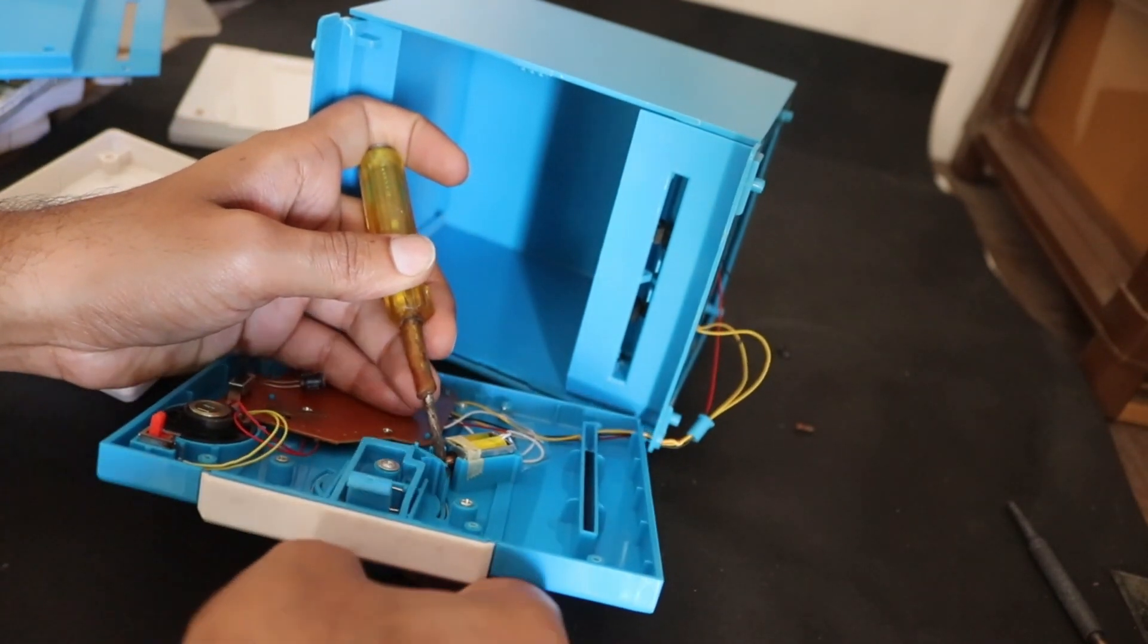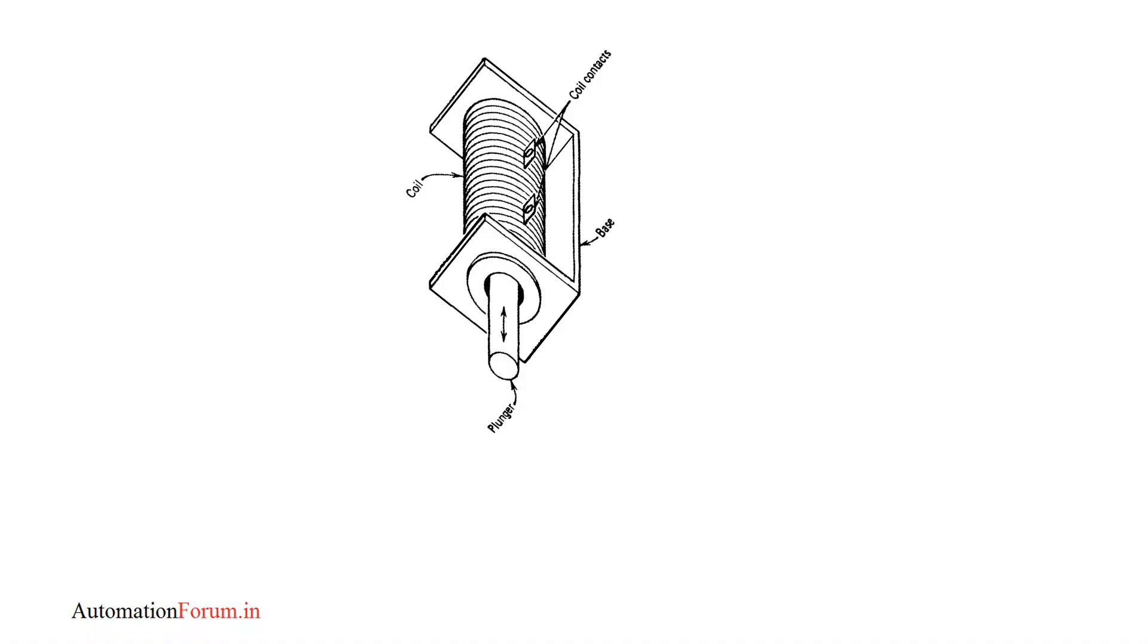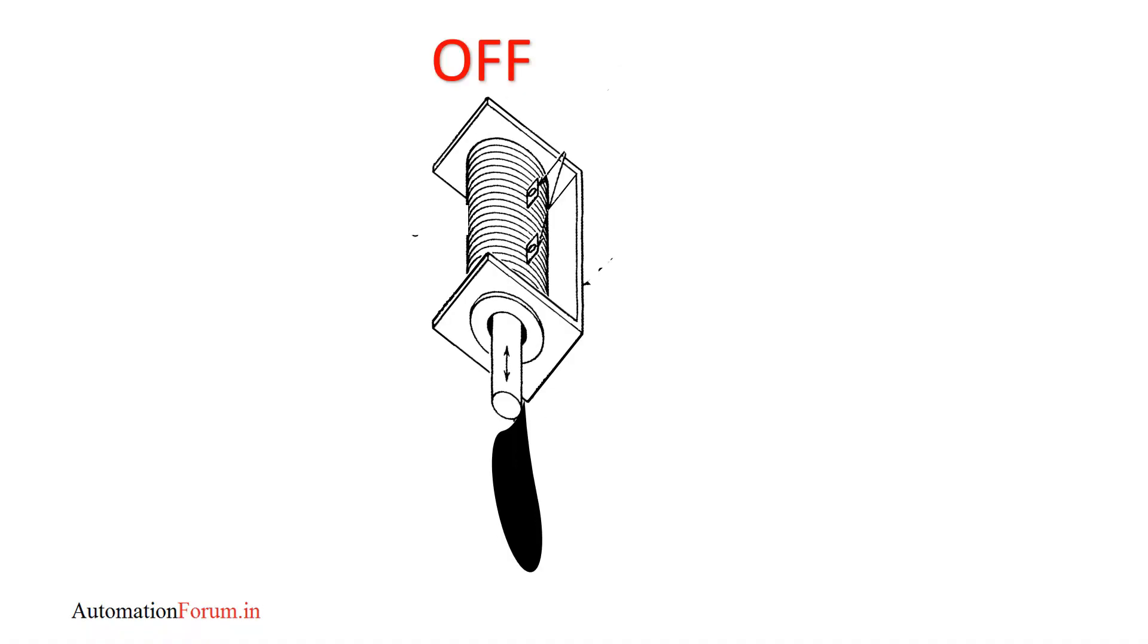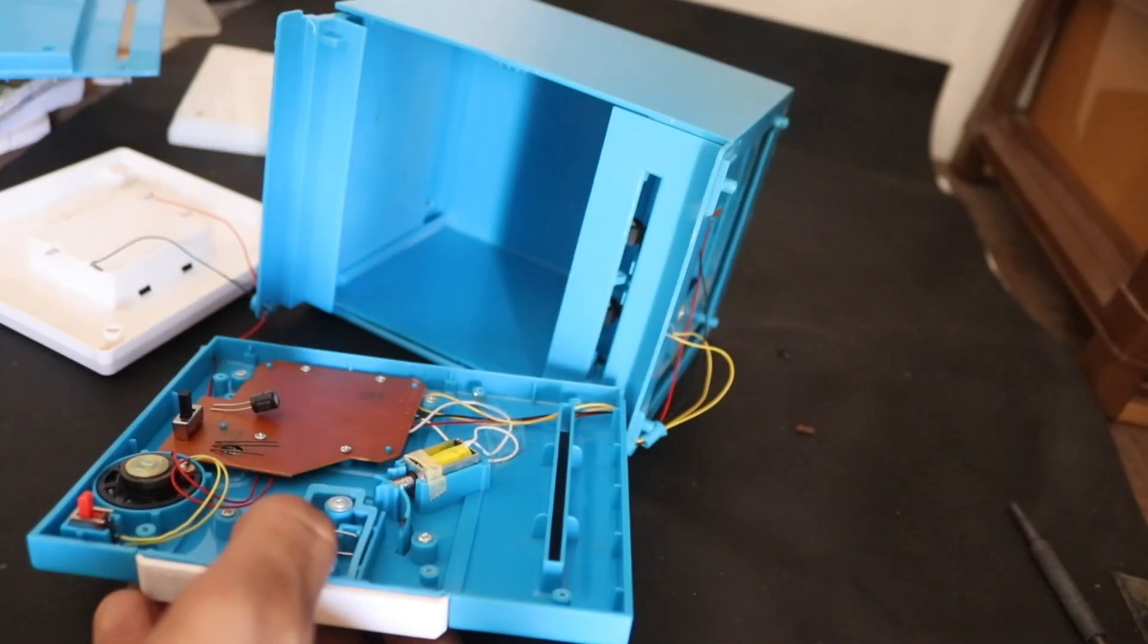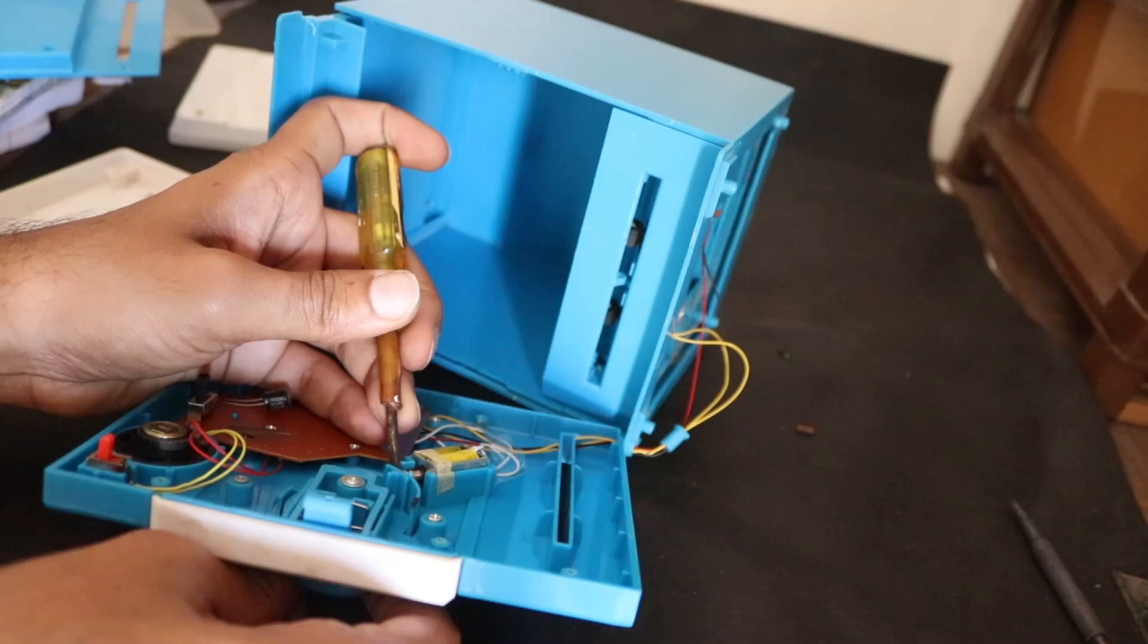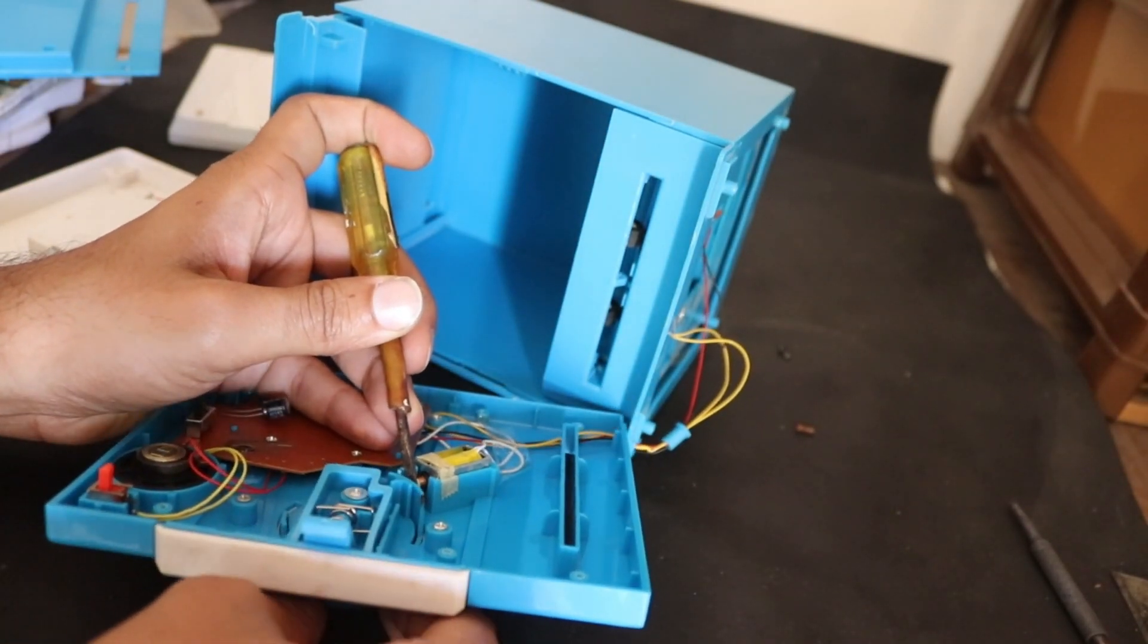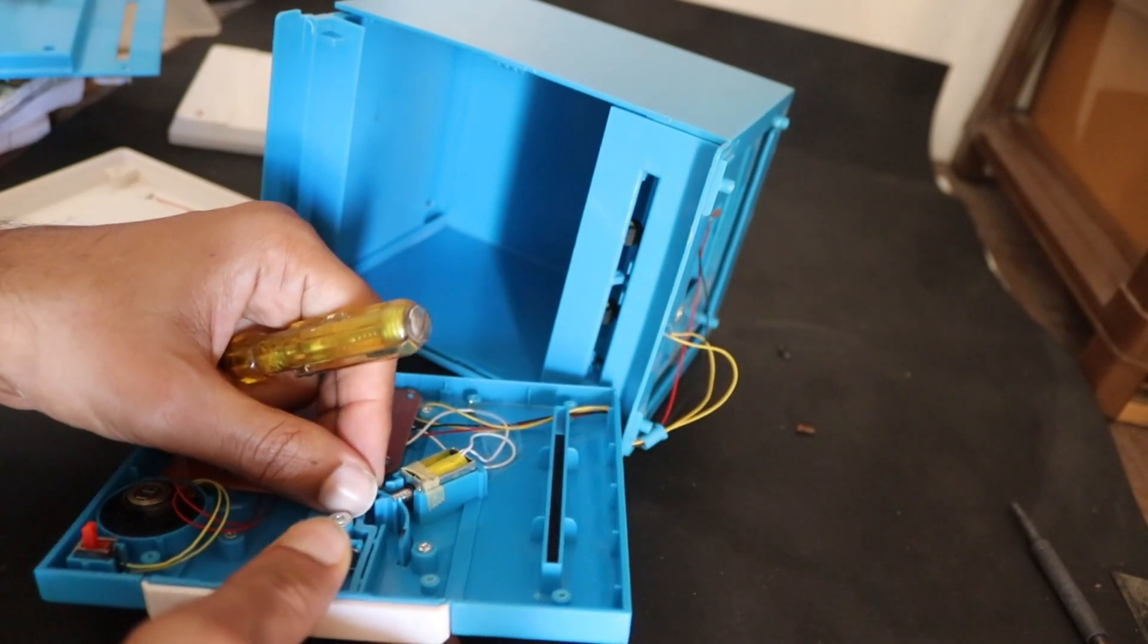So when the solenoid receives the current, the metal rod goes inside and the knob gets free to move to the side. But when the current stops, the spring pushes out the rod and blocks the knob again. So the problem was with the switch - it had been stuck and now it's working properly.